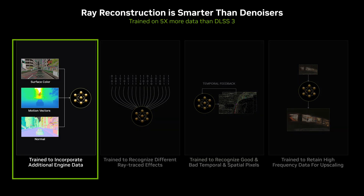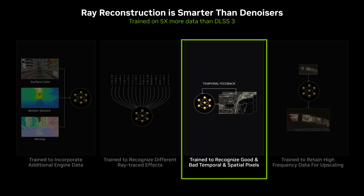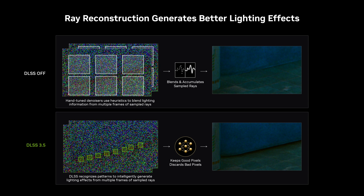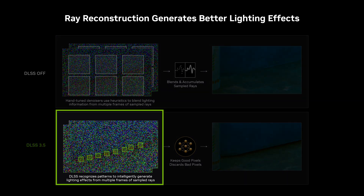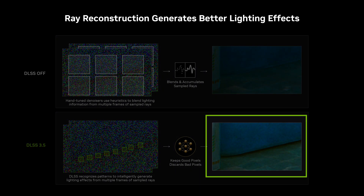DLSS 3.5 is trained on five times more data than DLSS 3. This was necessary because of the diversity of ray tracing effects that the model needs to recognize and work with. We've trained this new DLSS model to recognize many different ray tracing effects, to make smarter decisions about temporal and spatial information reuse, and to retain all the high frequency data that's necessary for high quality upscaling. Ray Reconstruction is smarter than denoisers. The DLSS AI is trained on a huge dataset of images created using an offline rendering process with far more computation than could be available in real time. The AI then recognizes certain patterns that correspond to effects such as global illumination and uses information from its training process in order to reconstruct a more realistic and dynamic image.